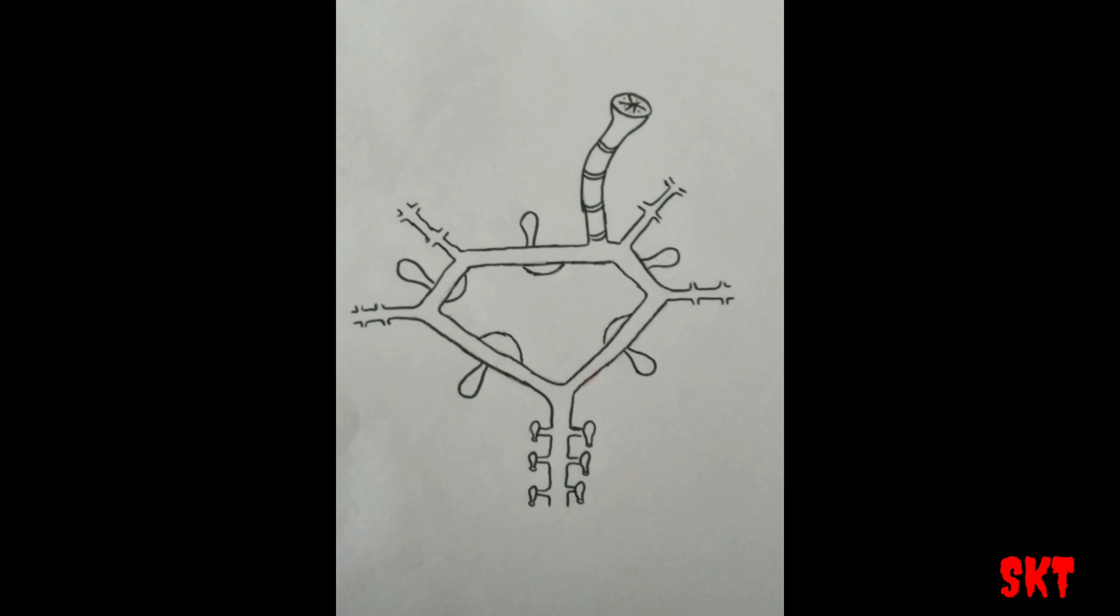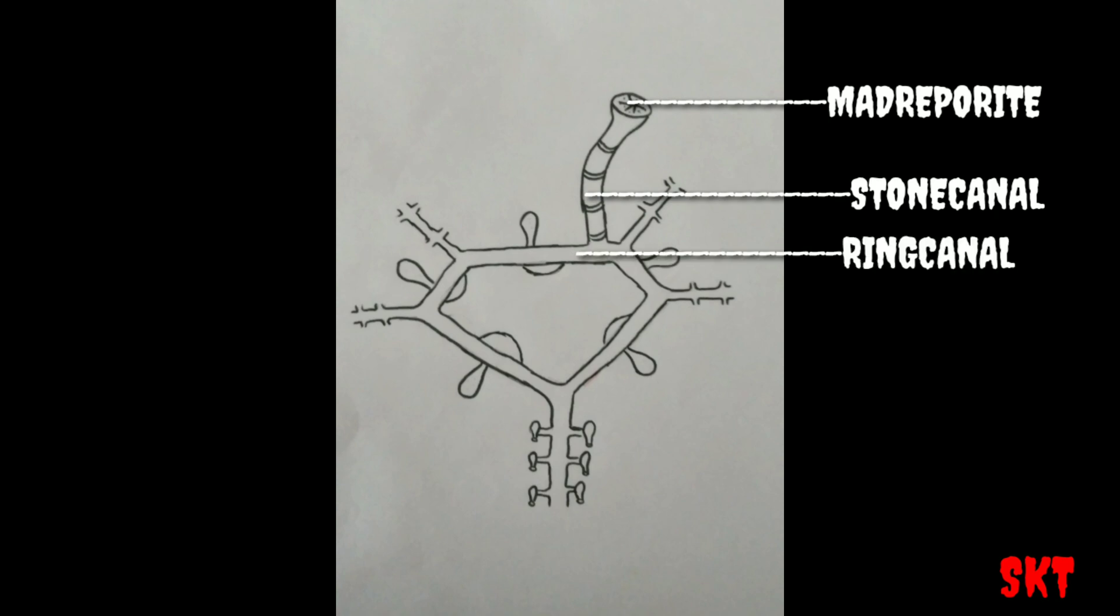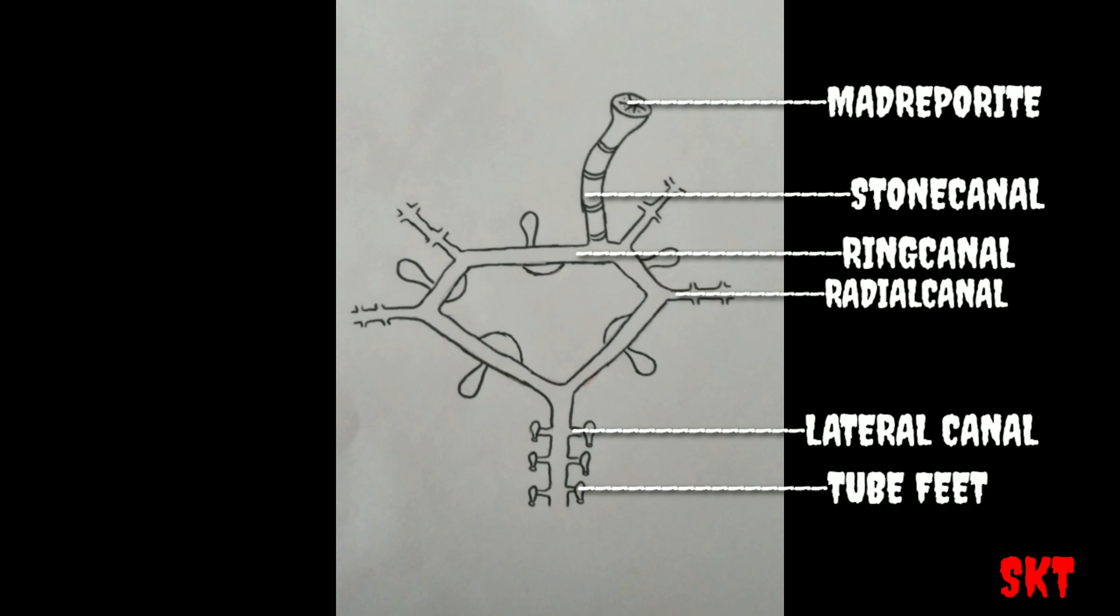So, the water moves in this direction. First, the water enters to the starfish through madreporite and it goes to the stone canal. From stone canal, it is connected to pentagonal ring canal. And ring canal is connected to rod-shaped radial canal. From radial canal, there arises two series of lateral canals. Lateral canals are connected to the tube feet through which the water moves out. Polian vesicles help to regulate the pressure inside the system.